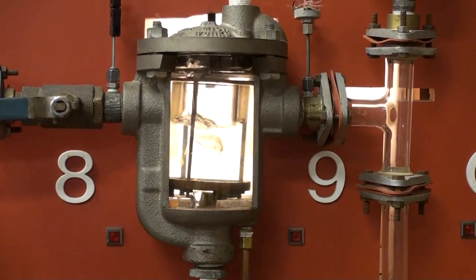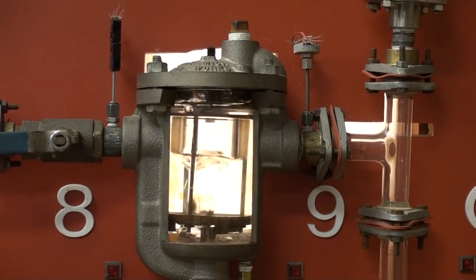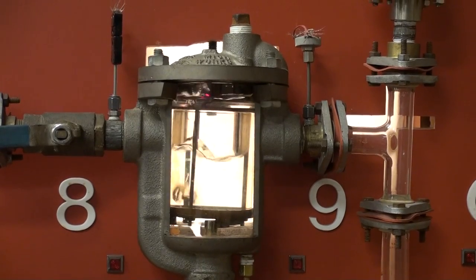Steam, air, and condensate enter the trap through an inlet tube beneath the bucket. Air and condensate are discharged through an orifice at the top of the trap.